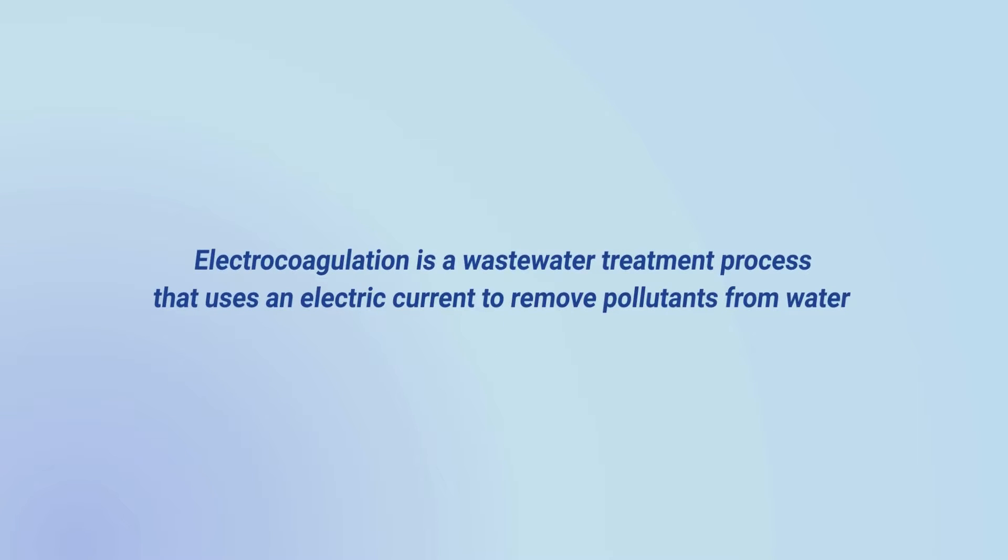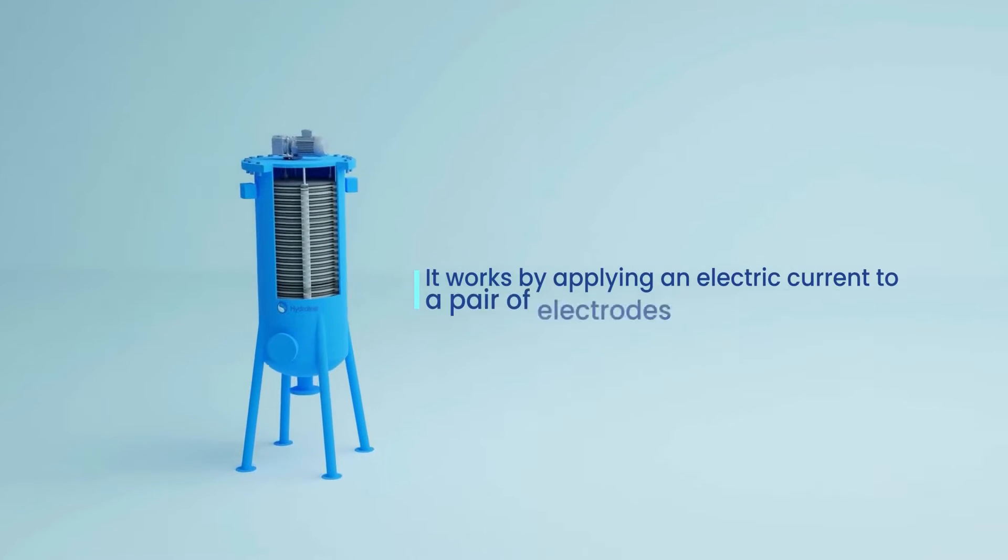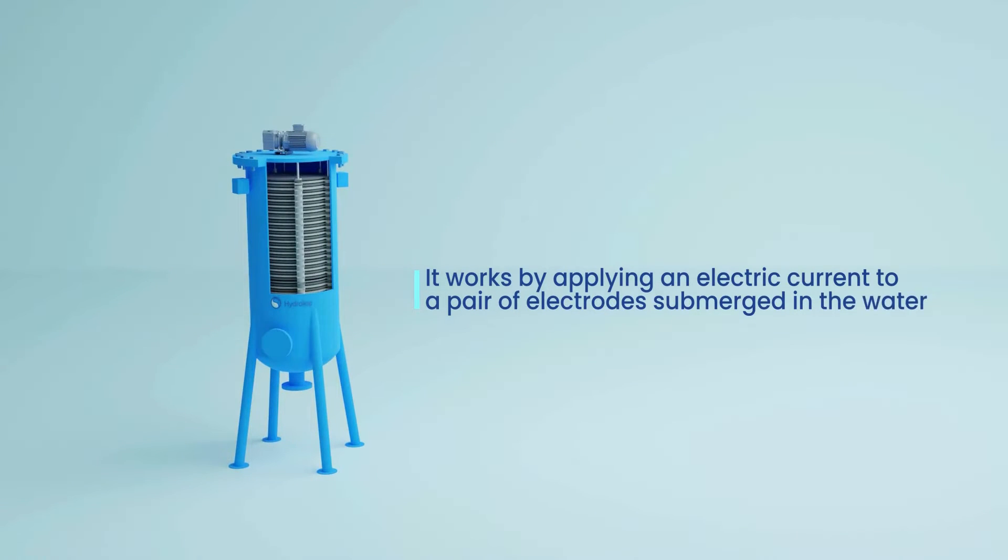Electrocoagulation is a wastewater treatment process that uses an electric current to remove pollutants from water. It works by applying an electric current to a pair of electrodes submerged in the water.